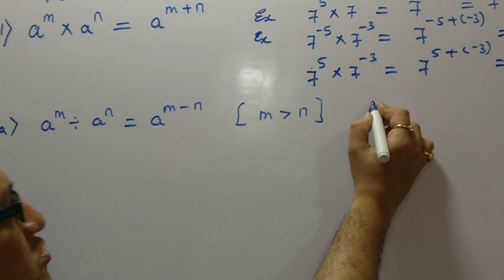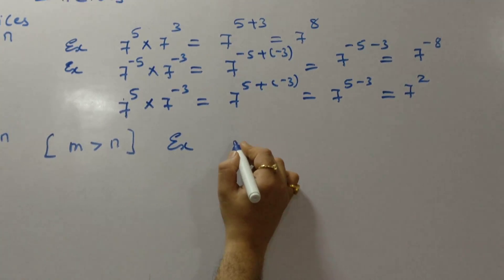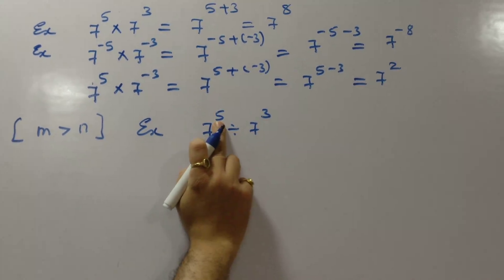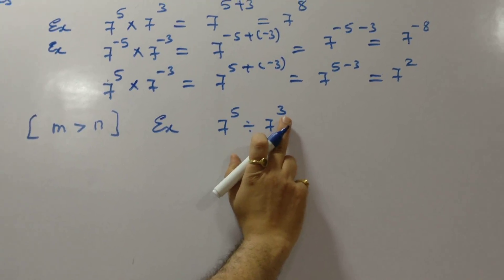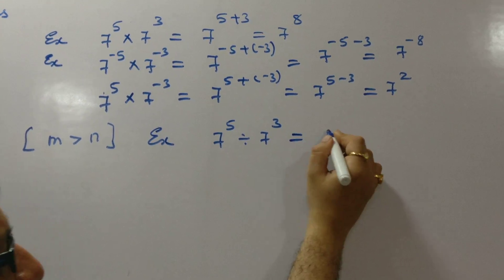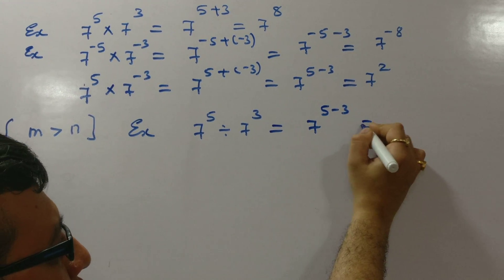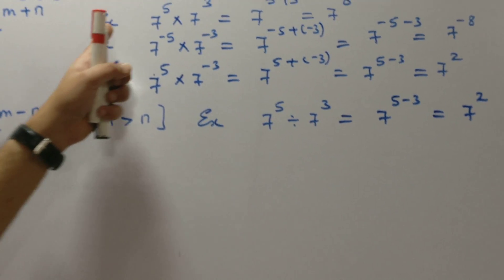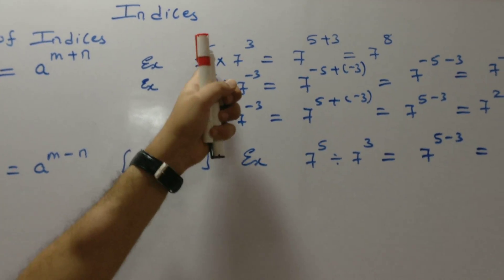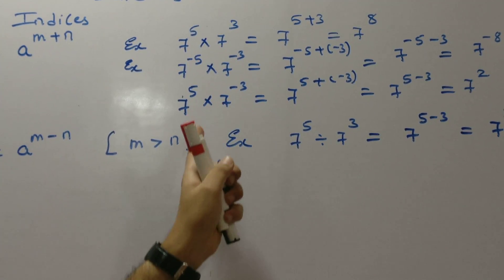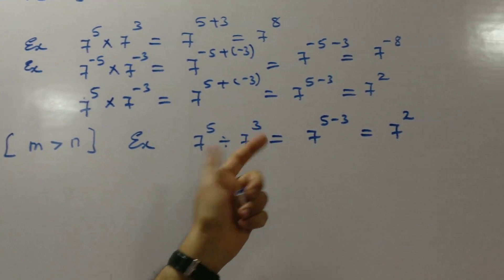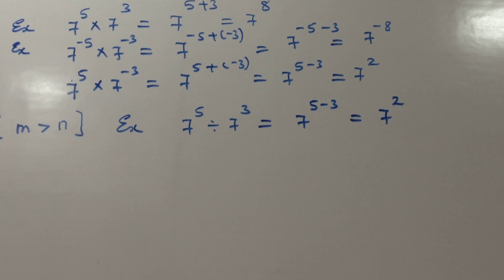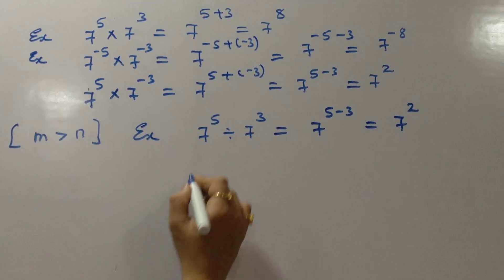Example: 7 raised to 5 divided by 7 raised to 3. Here 5 acts as M and 3 acts as N. Is M greater than N? Yes. So the answer will be 7 raised to 5 minus 3, which is 7 raised to 2. Both powers could be positive, both could be negative, or either positive or negative.